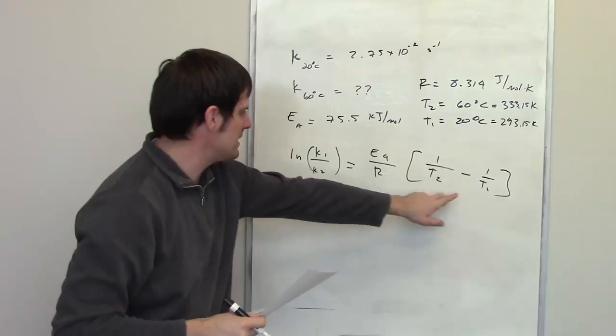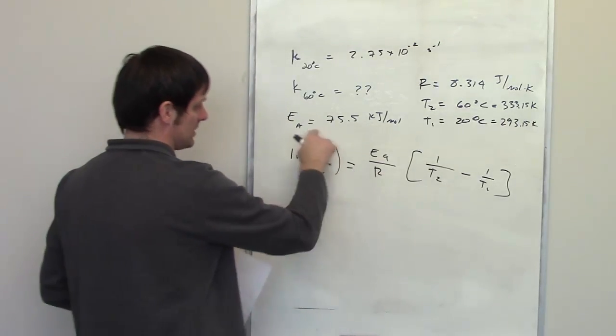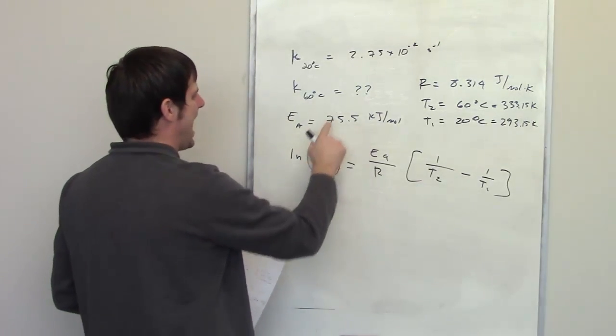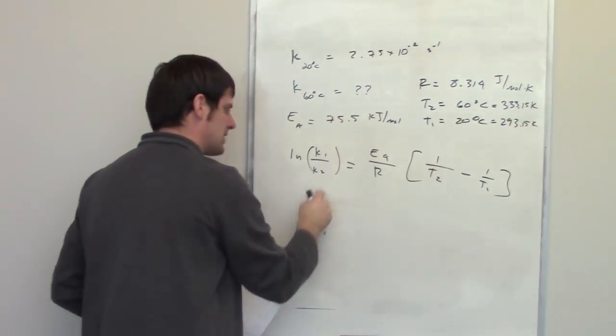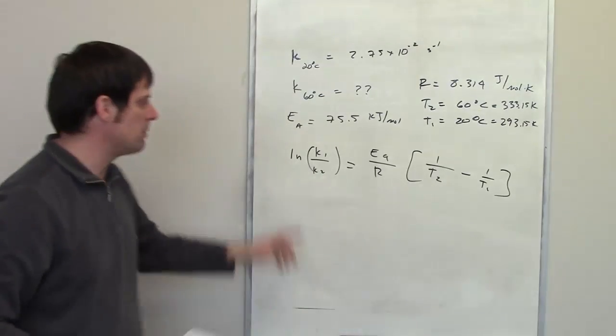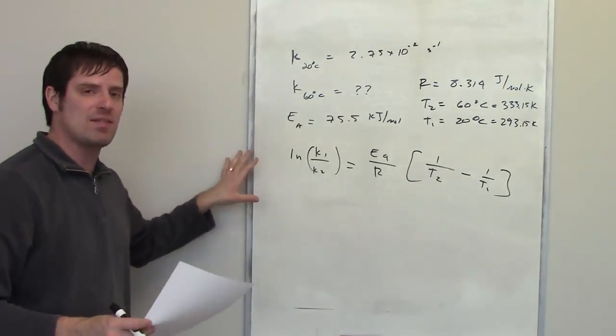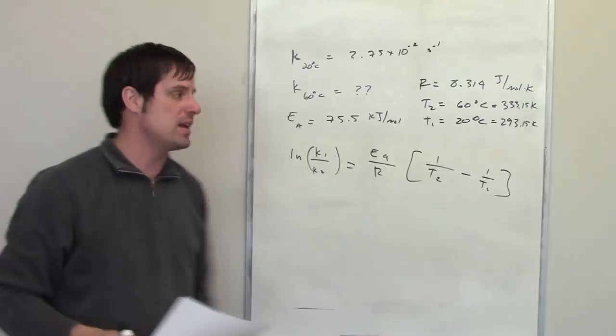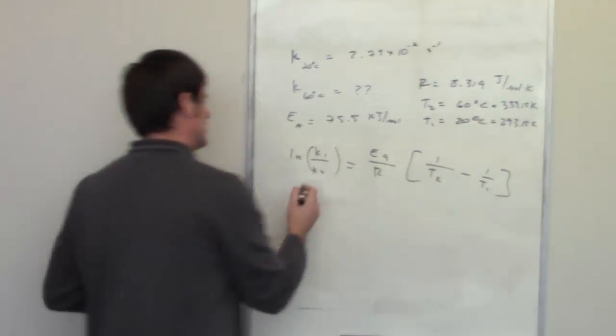So I have T1, I've got T2, I've got the ideal gas constant, I have my activation energy. I have k1, I'm trying to solve for k2. This is pretty much, at this point, just an algebra problem, where I have to get k2 on one side of the equation, and everything else on the other. I realize it's a lot of numbers, but we can go ahead and do that.